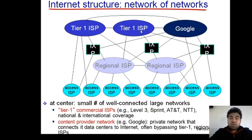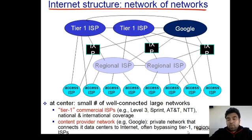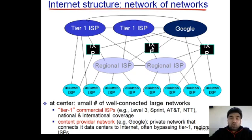Tier 1 ISPs are few in number and connected with each other in mesh topology. In between, we also have two more terms. Content providers — for example, Google — run a private network that connects their data centers to the internet directly, often bypassing tier 1 and regional ISPs, so they don't have to pay as much. The second term is IXP, which stands for Internet Exchange Point. These exchange points are used for transferring data locally within your region without using tier 1 ISP services.